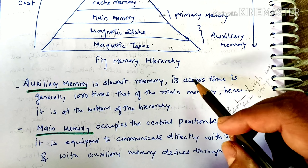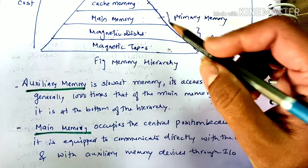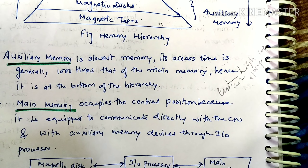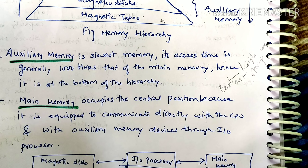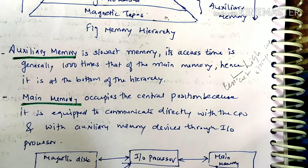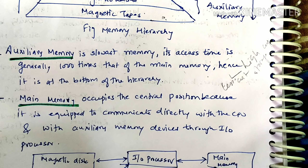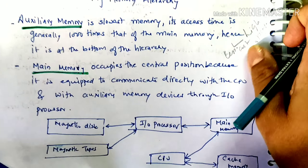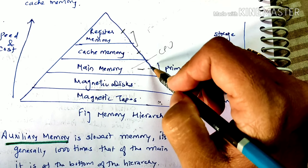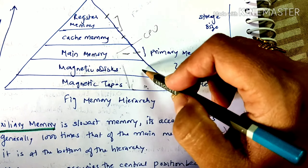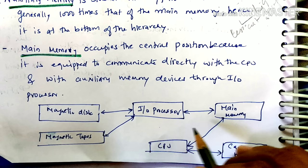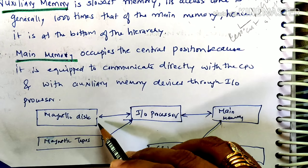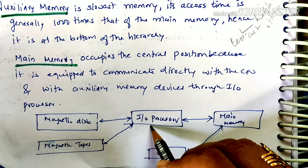The next level is main memory, also called primary memory. Main memory occupies the central position in the hierarchy because it is equipped to communicate directly with the CPU and with auxiliary memory devices through an input-output processor. So main memory is in the central position — it can directly access the CPU, and auxiliary memory communicates with it through the input-output processor.